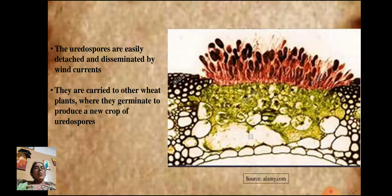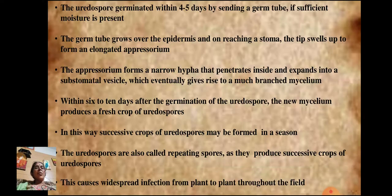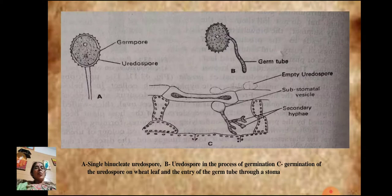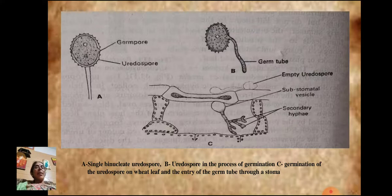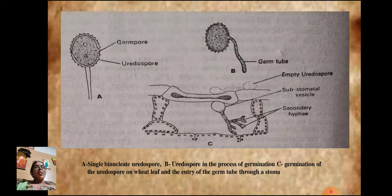The uredospores easily detach and are disseminated by wind currents, carried to other wheat plants where they germinate to produce a new crop of uredospores. On germination, the uredospore puts out a slender tube-like germ tube. When the germ tube falls on the wheat plant, it produces a vesicle-like structure called the appressorium. The appressorium produces branched mycelia that penetrate into the host through stomata, forming a sub-stomatal vesicle, which in turn produces secondary hyphae that spread throughout the host tissue.